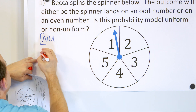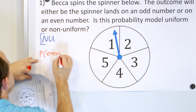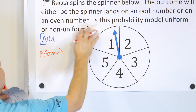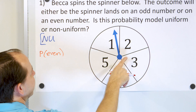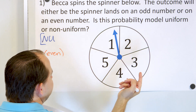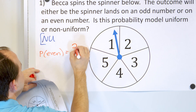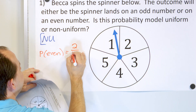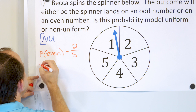The probability of spinning an even number — how many even numbers do we have? Two and four, that's it. There are only two of them, so there are two outcomes out of a total of five positions. Two-fifths is the probability of landing on an even number.